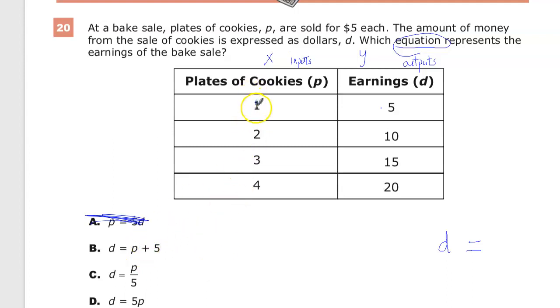Now, for this one, the p-value of 1 plus 5 gives you 6, but it should give me 5. If I put in 2, so 2 plus 5 is 7, not 10. So that's out.